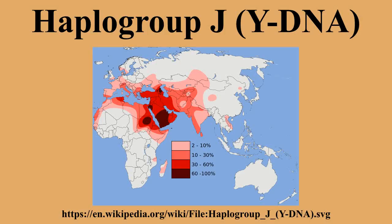Basal J* is found at its highest frequencies among the Socotra subclade distribution. The JM304* paragroup includes all of JM304 except for JM267 and JM172, and is rarely found outside of the island of Socotra, off the coast of Yemen, where it is quite frequent at 71.4%. JM304* has also been found with lower frequency in Oman, Ashkenazi Jews, Saudi Arabia, Greece, the Czech Republic, Uyghurs, and several Turkish peoples.